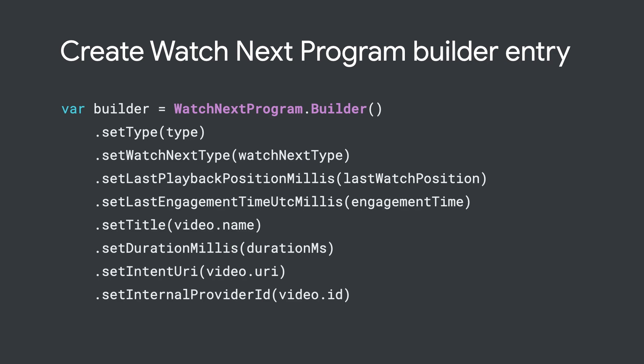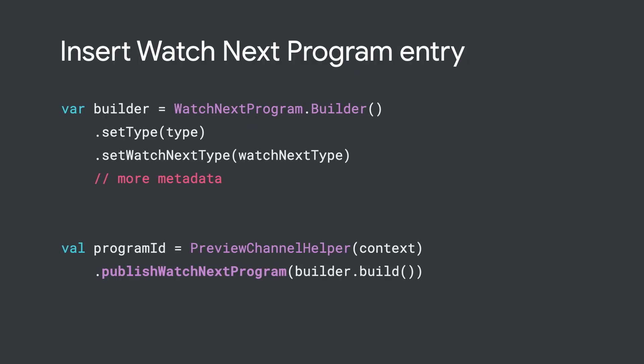Let's dive deep and see how we create a card. The Watch Next API uses a builder design pattern — simple and straightforward. Just add all the relevant metadata to the builder, for example, playback time, title, duration, the Watch Next type, etc. The more rich metadata you add, the richer your user experience will be. Once the builder is populated with all the metadata, for inserting a card in the Watch Next channel, just use the publish function of the API. The two most significant operations are the update and the delete. They use similar APIs and have been covered in detail in our Android Dev Summit talk.